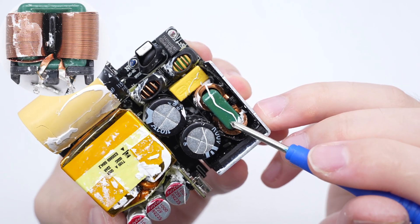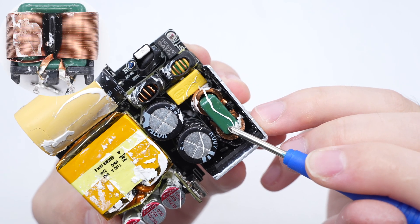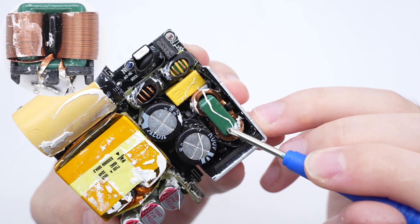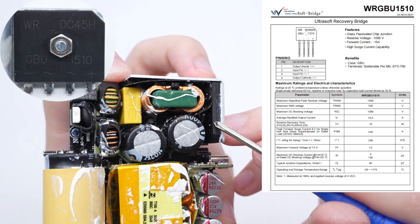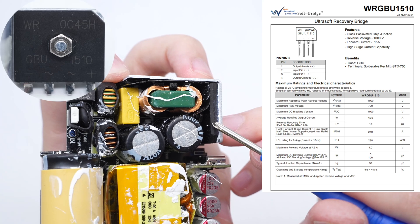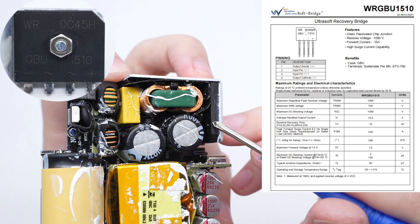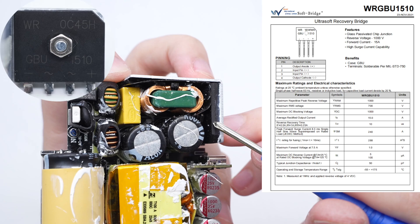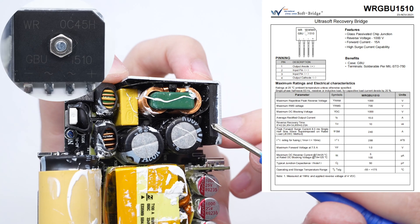The secondary common mode choke is wound with flat copper wire and has a green core. The bridge rectifier is from World and adopts GPU package. The operating temperature is negative 55 to 175 degrees Celsius. 15 amps, 1000 volts.